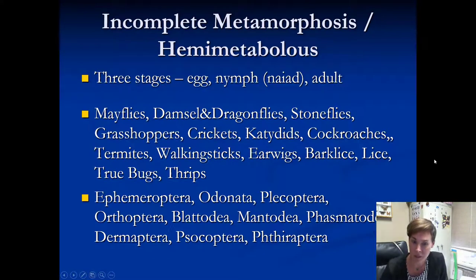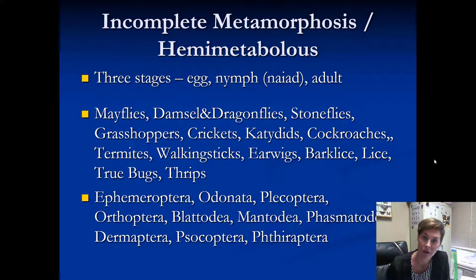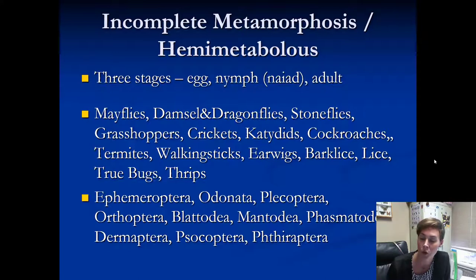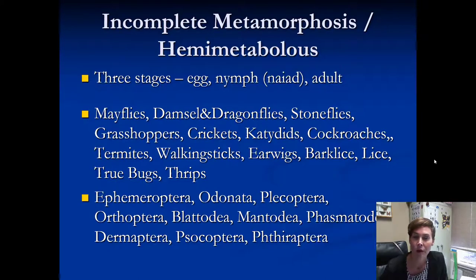Incomplete metamorphosis is also called hemimetabolous. 'Hemi' means half, so this is a half metamorphosis — it's not as complete as a beetle or a butterfly, but it's halfway there. Hemimetabolous or incomplete metamorphosis has three stages: the egg, the nymph, and the adult. If it lives in the water, we'll call it a naiad, so know that term also.